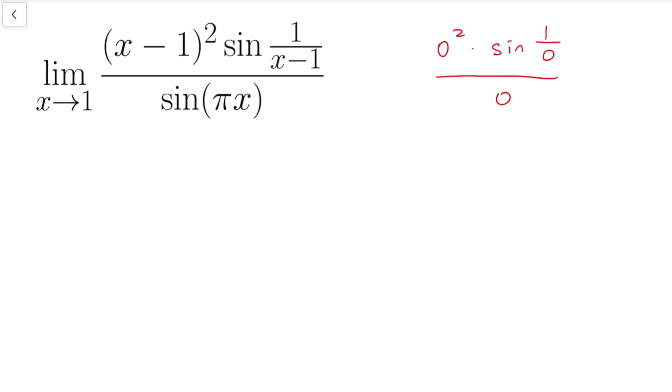To do this, I'm going to first let a new unknown called t that's equal to x - 1, so then when x tends to 1, this new unknown t will tend to 0.